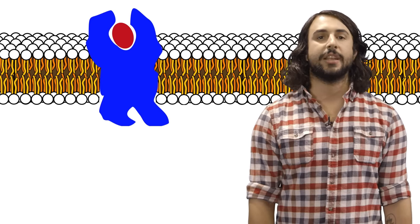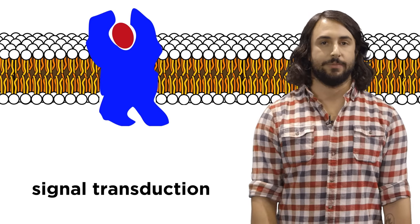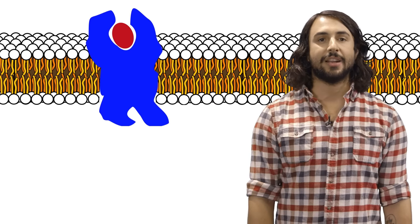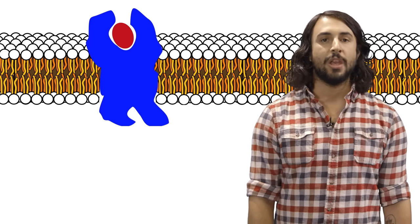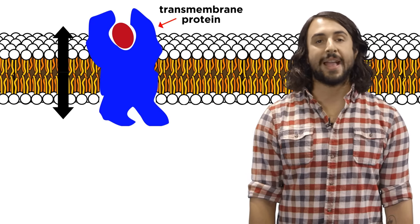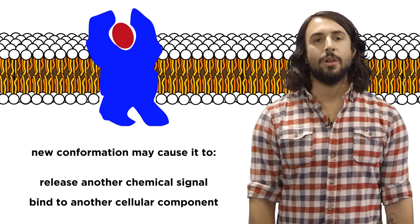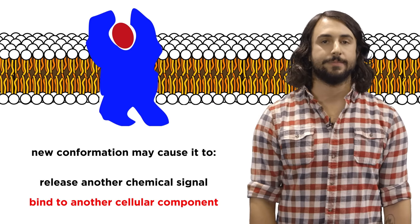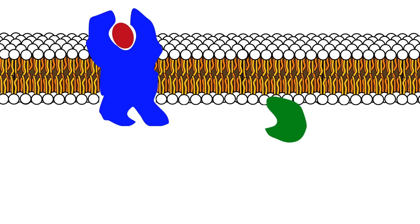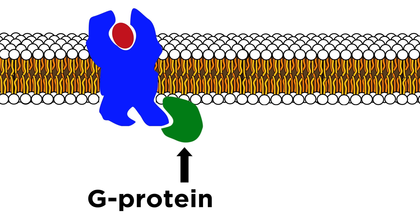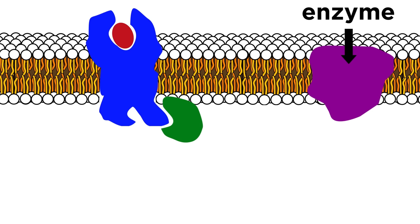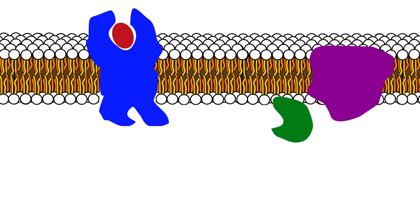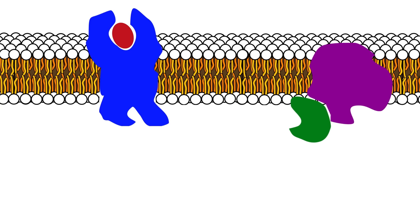One type of signaling response is called signal transduction. When the receptor binds to its substrate and causes a conformational change in the receptor, which is a transmembrane protein that will span the plasma membrane, this change in shape will cause it to either release something inside the cell, or bind to something else inside the cell. Once the receptor is activated, it might bind to something called a G-protein, which is attached to the inner layer of the plasma membrane, and once the G-protein is activated, it might bind to an enzyme causing another conformational change, which will release another different signaling molecule, like cyclic AMP.